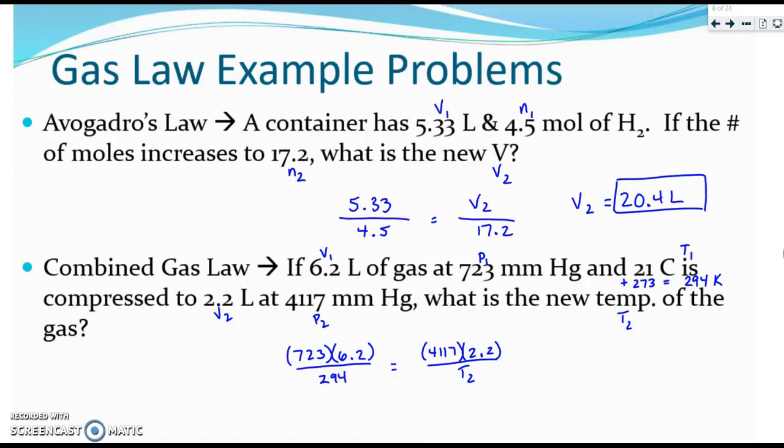In the end when you round for sig figs which should be 2, T2 should come out to be right around 590 Kelvin. I think it's actually about 594 but we only want two sig figs.